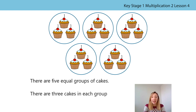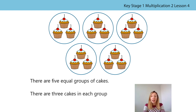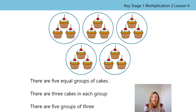Let's count our groups together now. One group of three — are you joining in with me? One group of three, two groups of three, three groups of three, four groups of three, five groups of three. There are five groups of three. Can you say that with me? There are five groups of three. Fantastic.